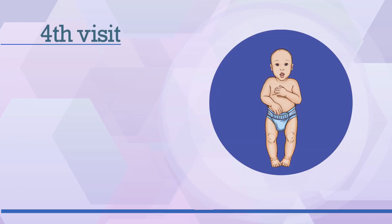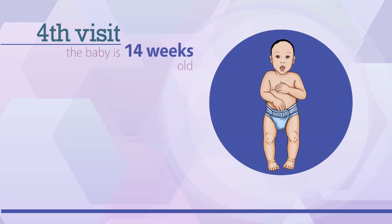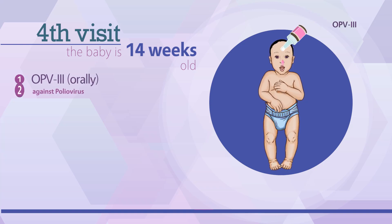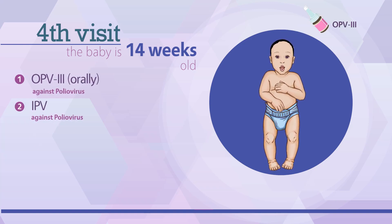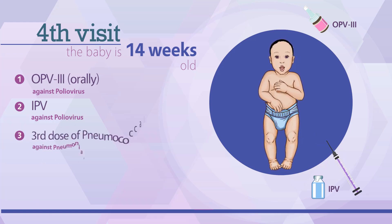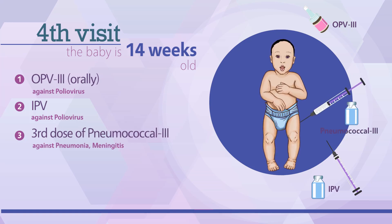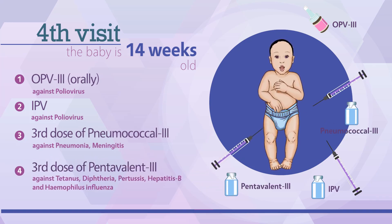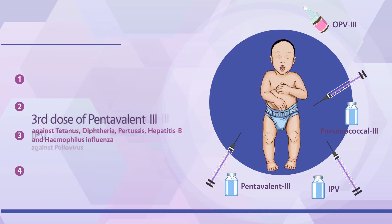The fourth visit is scheduled when the baby is 14 weeks old. On this visit, the third dose OPV3 is given orally along with the first dose of IPV, that is the injectable polio vaccine, given intramuscularly in the left thigh for protection against polio. The third dose of Pneumococcal 3 is administered intramuscularly in the left thigh, and Pentavalent 3 vaccine is administered intramuscularly in the right thigh.